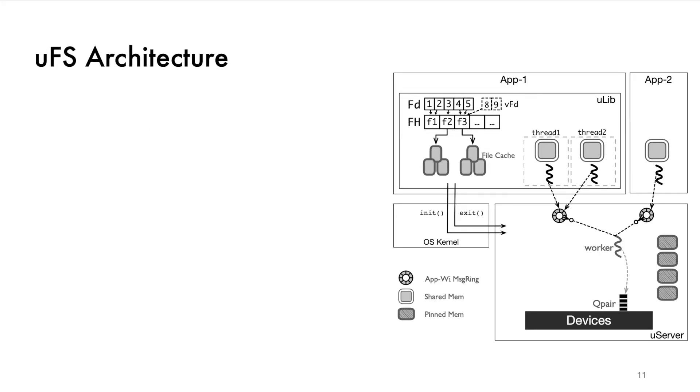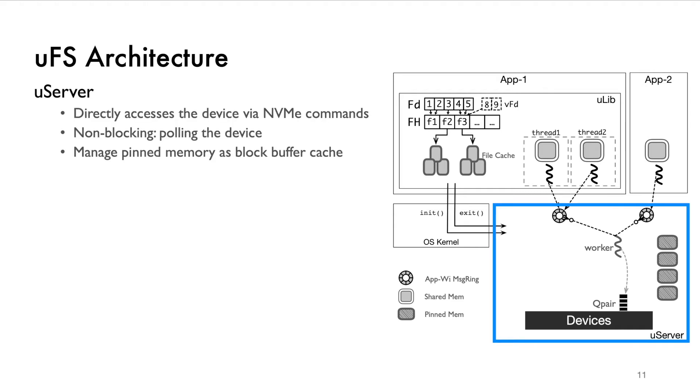We now take a look at the basic architecture of UFS shown in the graph. We have a file system that runs in the user space process called USERVER. USERVER directly accesses the storage device via NVMe commands in its own address space. The device driver employs polling such that USERVER never needs to block on IO. The worker also manages the pinned memory for DMA transfer and organizes the block buffer cache.